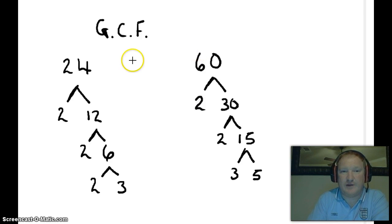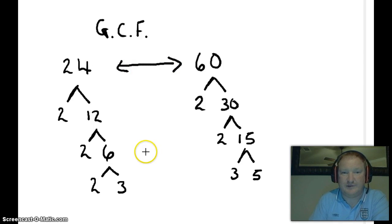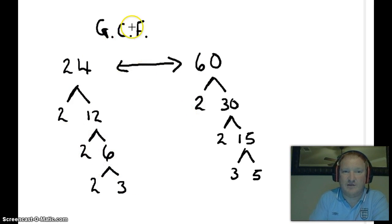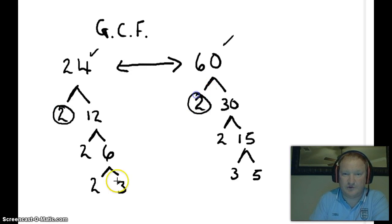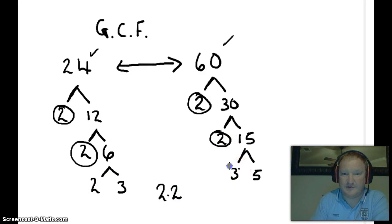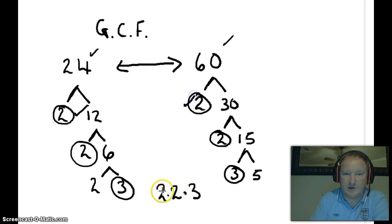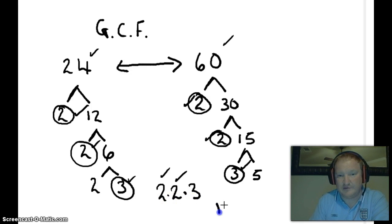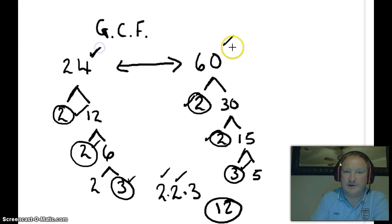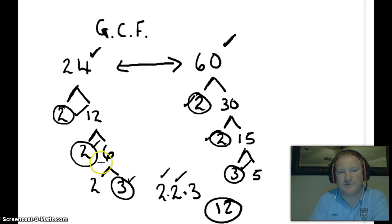Now we're trying to find the greatest common factors of 24 and 60. The greatest common factors are the factors which are common to both. 24 has 2 squared times 3 and 60 has 2 squared times 3 times 5. We match up the common 2s and the common 3s. So 2 times 2 times 3 gives us 12. The greatest common factor of 24 and 60 is 12.